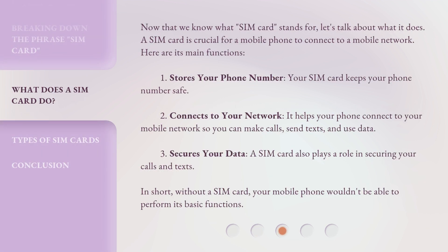Now that we know what SIM card stands for, let's talk about what it does. A SIM card is crucial for a mobile phone to connect to a mobile network. Here are its main functions: 1. Stores your phone number — your SIM card keeps your phone number safe. 2. Connects to your network — it helps your phone connect to your mobile network so you can make calls, send texts, and use data. 3. Secures your data — a SIM card also plays a role in securing your calls and texts. In short, without a SIM card, your mobile phone wouldn't be able to perform its basic functions.